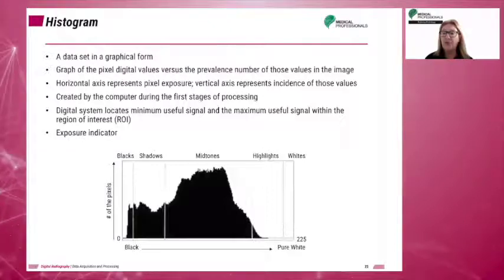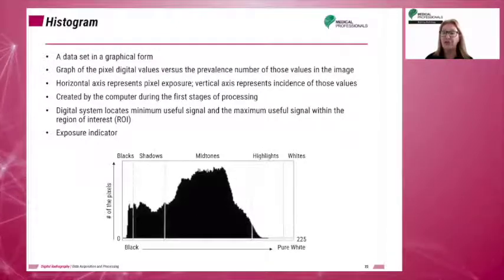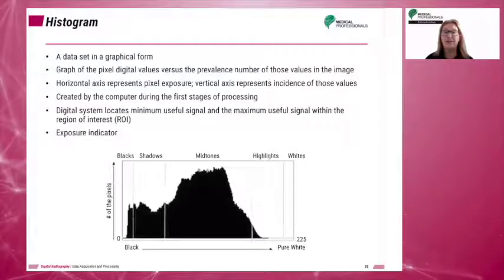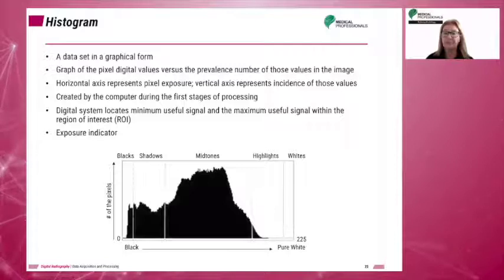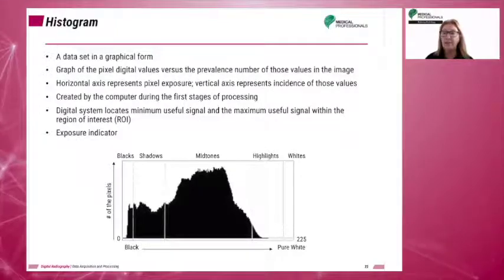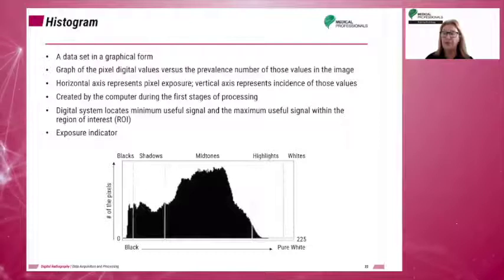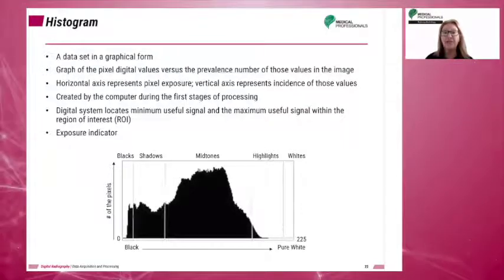Histogram analysis is accomplished through the use of complex mathematical calculations, or algorithms, that allow the exposure histogram to be compared with reference histograms stored in the computer. The histogram is a graph of each unique digital value displayed by the pixels and the number of times that value occurs in the image data. The computer uses the shape of the histogram and the algorithm to locate the values of interest and determine the exposure indicator.